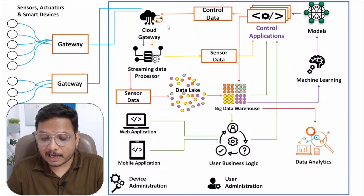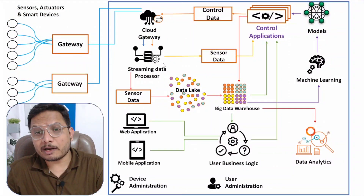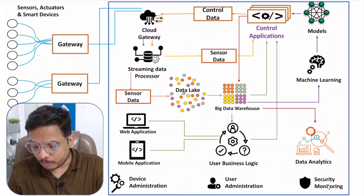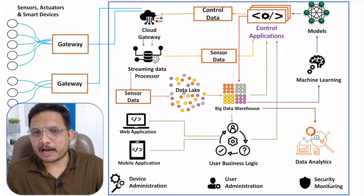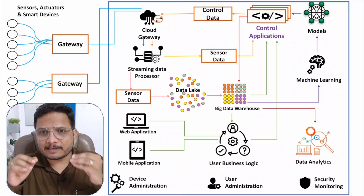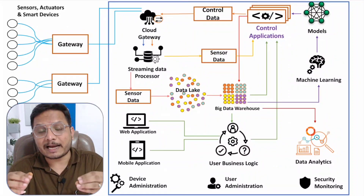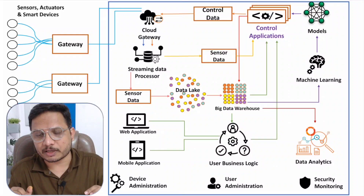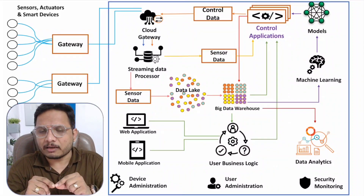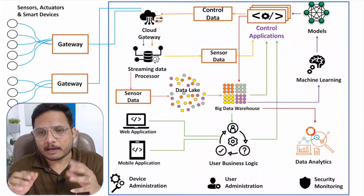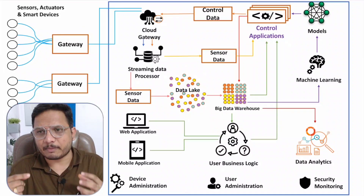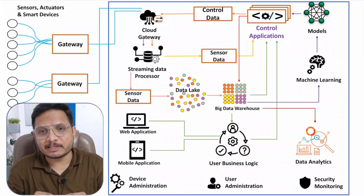The final part of IoT architecture is security monitoring, which is essential because all data is uploaded to the internet and can potentially be accessed by anyone. Security concerns must be continuously updated as technology advances, and many industries are working to address these challenges.